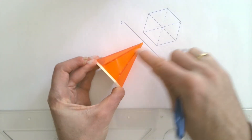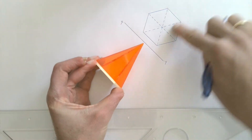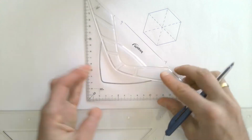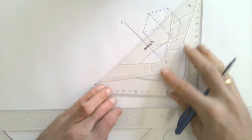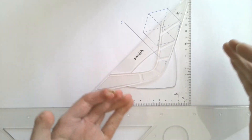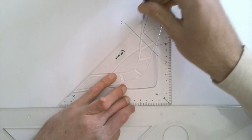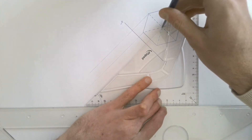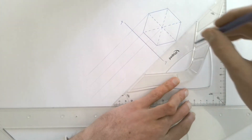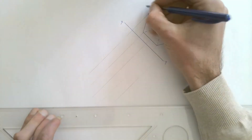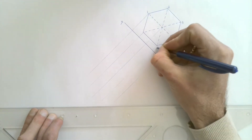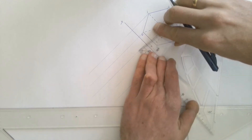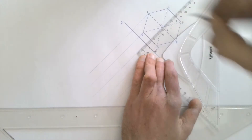We're now going to project down and draw the front view of that pyramid by projecting across our XY line. We always have to project at 90 degrees to the XY line. Because that XY line is at 45 degrees, we project back at 45 degrees — 45 plus 45 gives us our 90 degree angle. We're going to project each of those points, including the center point, across our XY line. We have to number each corner and the center point, and remember we've got to have our 10 millimeter gap between our XY line and the start of our drawing.